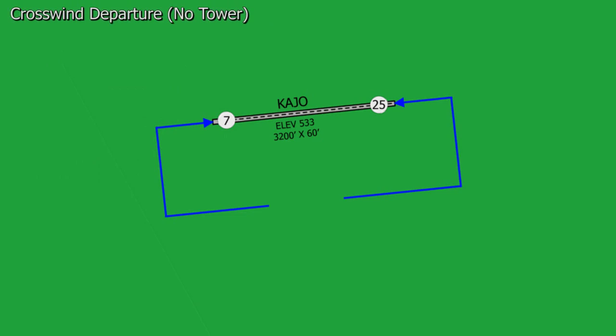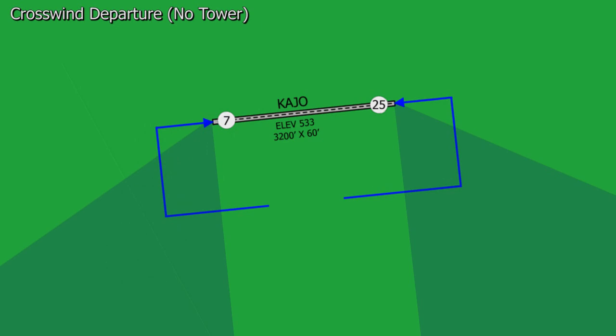For a crosswind departure at Corona, from Runway 25 we can only do a left crosswind departure to the south, and from Runway 7 we can only do a right crosswind departure to the south. Because both traffic patterns are located to the south, our crosswind departure must be done to the south.